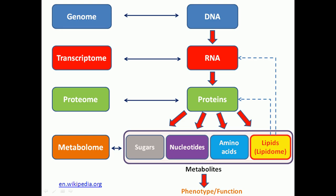Looking at the schematic: DNA relates to the genome and genomics; RNA relates to the transcriptome and transcriptomics; proteins deal with proteomics; and the metabolome includes sugars, nucleotides, amino acids, lipids, and all other metabolites and macromolecules — all heading toward the phenotype. In terms of definition, genomics is a discipline in genetics that applies recombinant DNA technology, DNA sequencing methods, and bioinformatics to sequence, assemble, and analyze the function and structure of genomes — that is, the complete set of DNA within a single cell or organism.